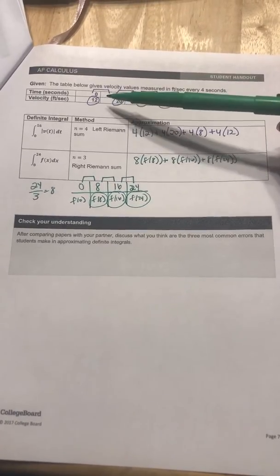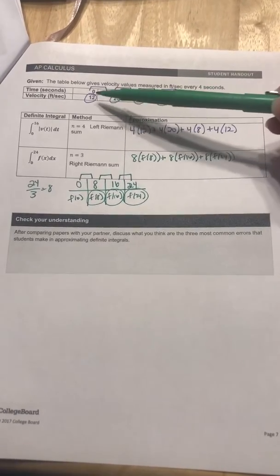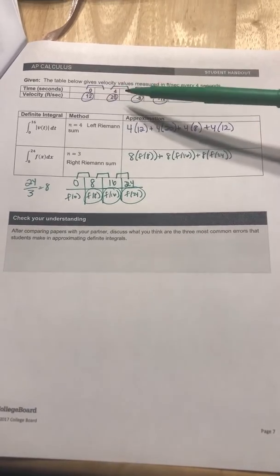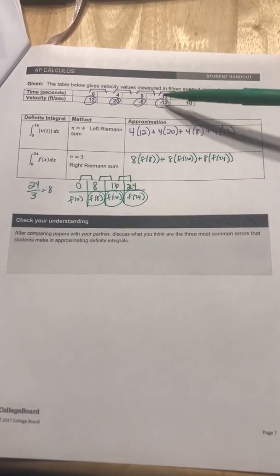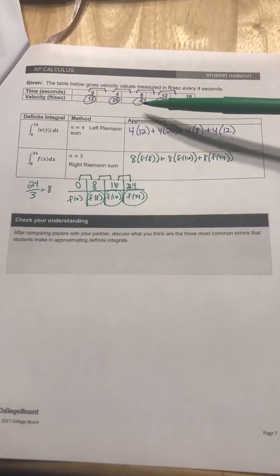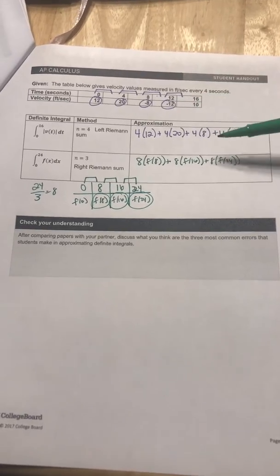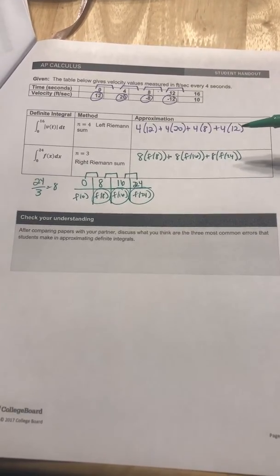And then they want you to use the left endpoints, so between the two, you choose the left number. So from 0 to 4, the left one is 12. From 4 to 8, the left one is 20. From 8 to 12, it's going to be positive 8 for this problem, but negative 8 up here. And then from 12 to 16, you're going to choose positive 12. Then you just multiply the heights.